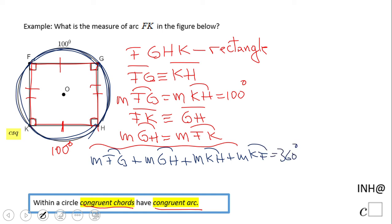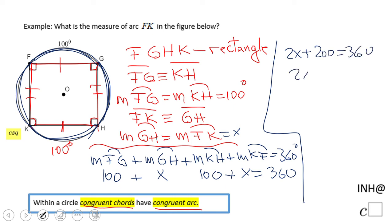And again, if you notice, FG is 100 and KH is 100. I'm gonna call these both x because they are both the same. So we end up with 2x plus 100 plus 200 equals 360. 2x equals 360 minus 200, which is 160. Divided by 2, x equals 80.